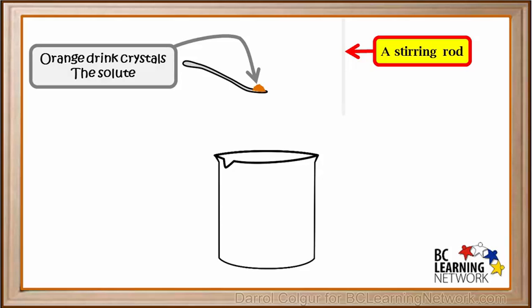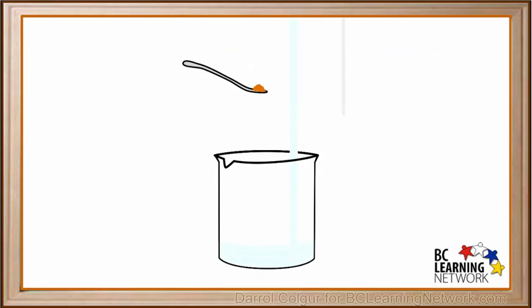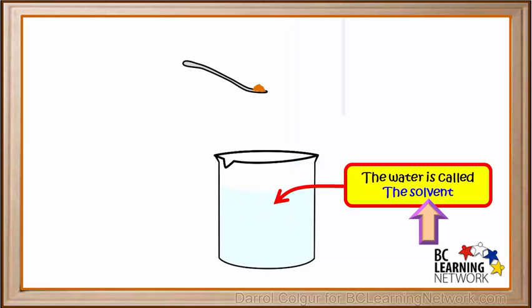We'll also get a stirring rod we can use. Now we'll add some water to the beaker from a tap. The water is the ingredient present in the larger amount, so it is called the solvent in this case.